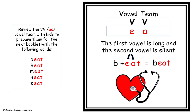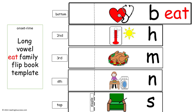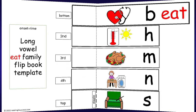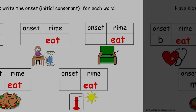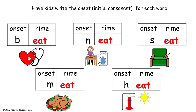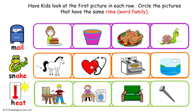Review the VV EA vowel team with kids to prepare them for the next booklet with the following words: beat, heat, meet, neat, and seat. This is a template for the vowel team EA booklet. Now have kids write the onset — the initial consonant — for each word. And this is the completed example.